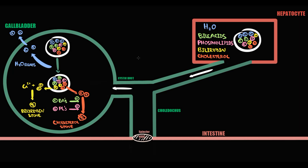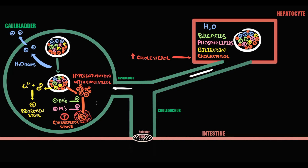The first reason why cholesterol gallstones can be formed is increasing bile cholesterol level. Once the liver produces bile with a lot of cholesterol, bile is delivered to the gallbladder. The increasing amount of cholesterol in the bile is called hypersaturation of bile with cholesterol. The higher the amount of cholesterol molecules, the more sticky they become, and in this state they very easily aggregate with each other into one large stone.